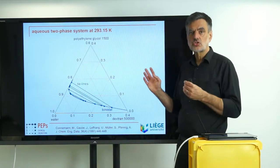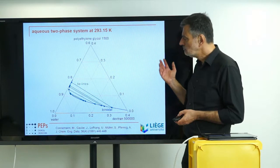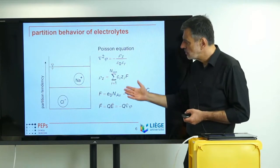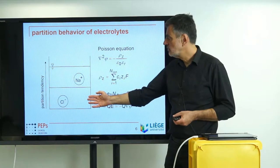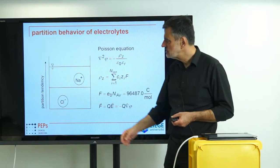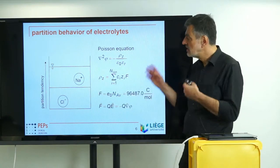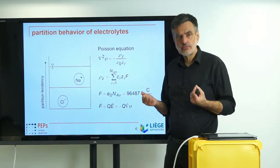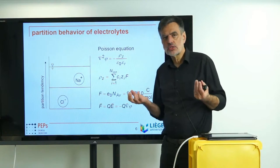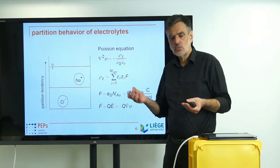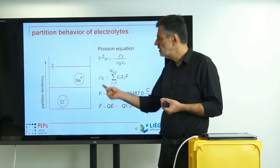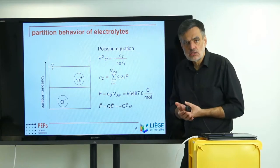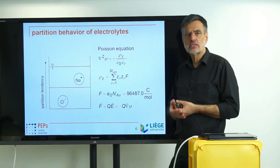If we add a salt like sodium chloride to a two-phase system, it dissociates into the two ions. Apparently, we now have two species that can behave independently, because they are just like other species added to a two-phase system — they can in principle have different partition coefficients. In order to understand the consequences, let's look at some physical equations. I would like to start with the so-called Poisson equation, which relates phi — the electrostatic potential — to rho_z, the net charge density, divided by the dielectric properties: epsilon zero times epsilon_r.